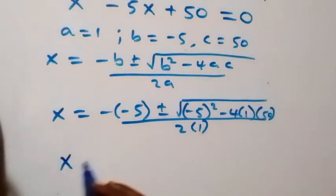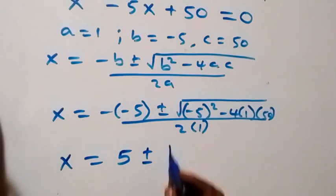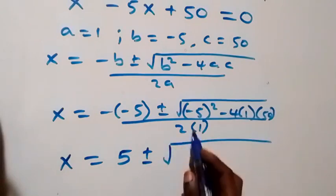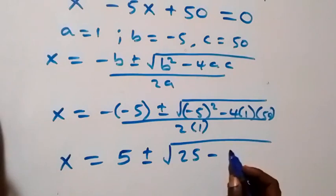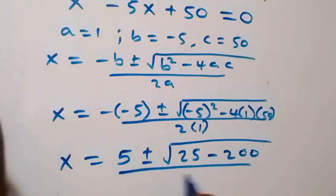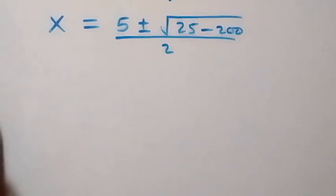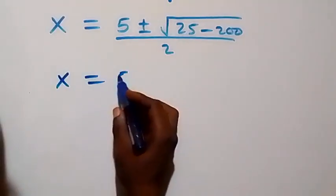This simplifies to x equals five plus or minus square root of 25 minus four times one times 50, which is minus 200, all over two. So x equals five plus or minus square root of negative 175, all over two.